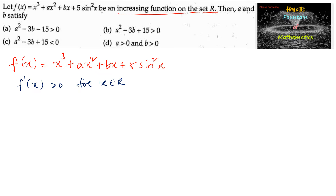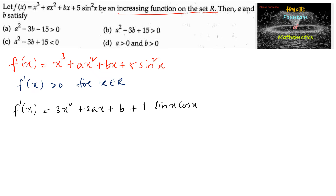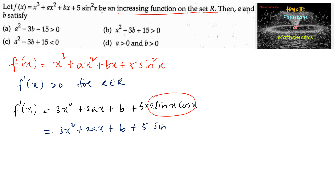So let us find the differentiation. f'(x) = 3x² + 2ax + b + (5sin²x differentiated) = 3x² + 2ax + b + 10sinx cosx. We can write 5 times 2sinx cosx, and since 2sinx cosx = sin2x, we rewrite this as 3x² + 2ax + b + 5sin2x.